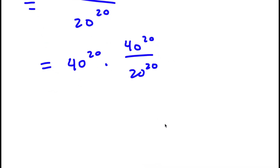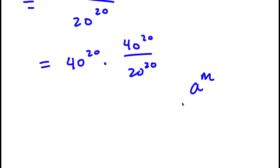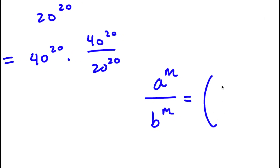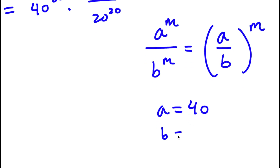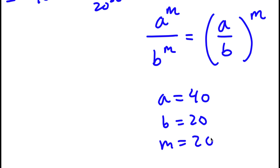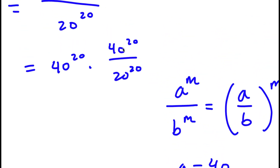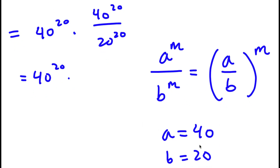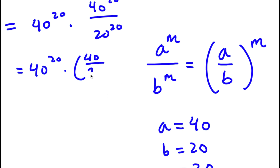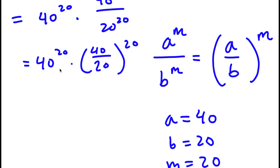If I have something in the form A to the power of M over B to the power of M, this is the same thing as A over B to the power of M. So here A is 40, B is 20, and M is 20. So 40 to the power of 20 over 20 to the power of 20 can be rewritten as 40 over 20 to the power of 20, and 40 divided by 20 is simply equal to 2.